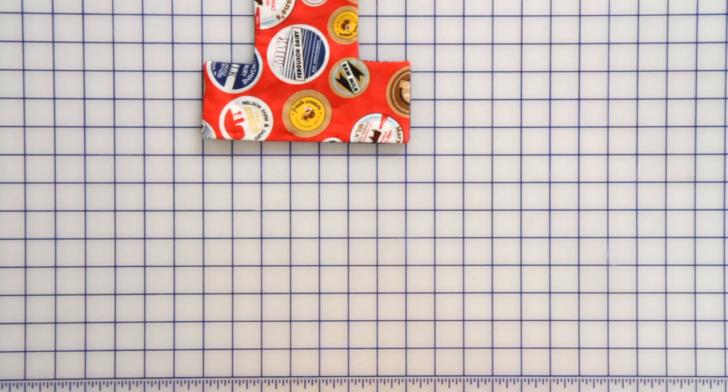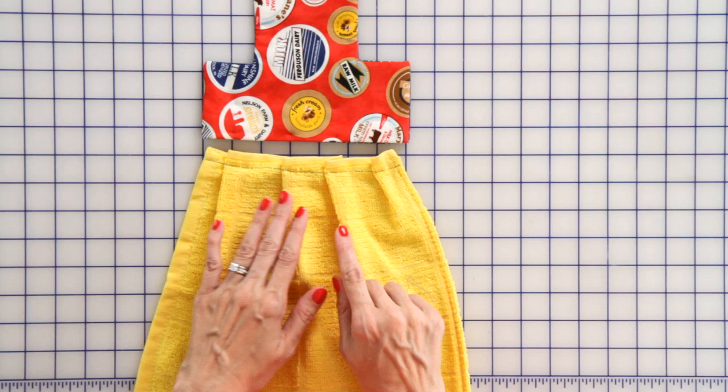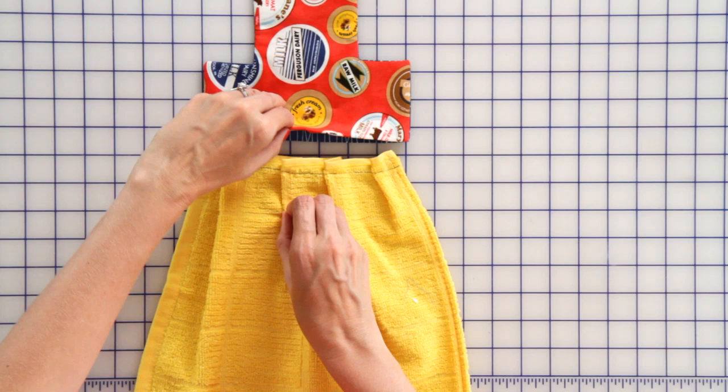Then we're going to do a top stitch across the top and your stitching will look like this.